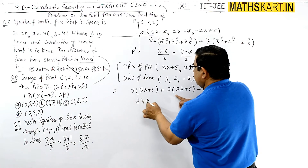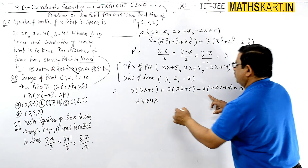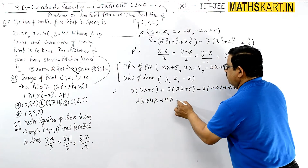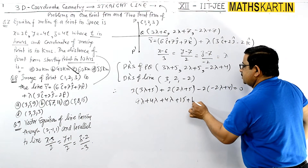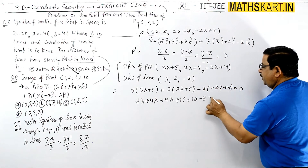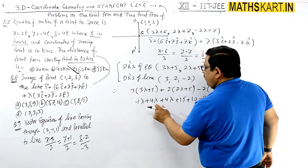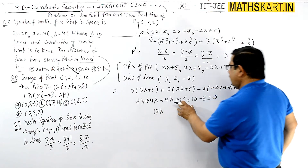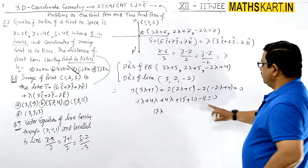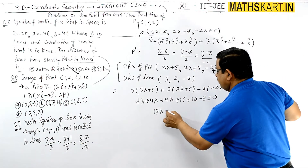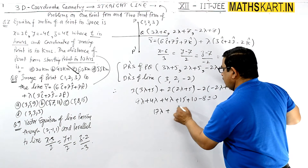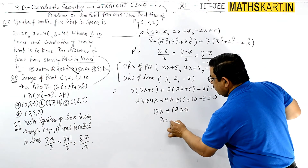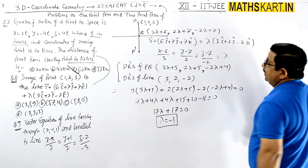Solving: 9λ + 15 + 4λ + 10 + 4λ − 8 = 0, giving 17λ + 17 = 0, so λ = −1. With λ = −1, the foot point Q is: x = −3 + 6 = 3, y = −2 + 7 = 5, z = 2 + 7 = 9. So Q is (3, 5, 9).